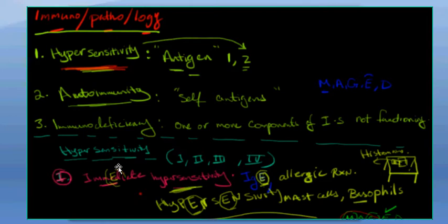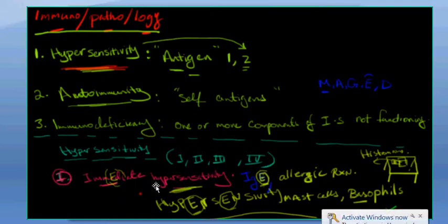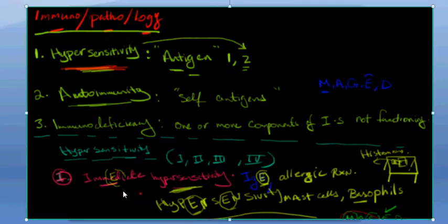Hypersensitivity has certain classifications: class one, two, three, and four. Class one is immediate hypersensitivity. I put an 'E' on the word immediate because we use the antibody IgE as well — it helps you remember that immunoglobulin E is what's involved in immediate hypersensitivity against allergic reactions.